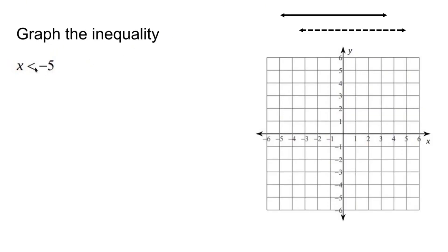Graph the inequality x is less than negative 5. Well, we know from back in the day that anything that is x equals some number is going to be a vertical line. Well, there's a little change here. This isn't x equals negative 5. This is x is less than.